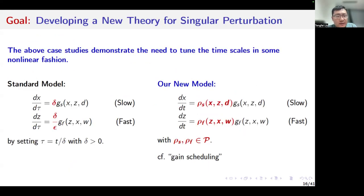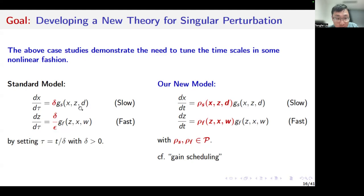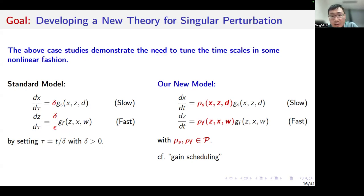The equations on the left-hand side give the standard model of singular perturbation. I introduced a time rescaling so that each subsystem is associated with a perturbation parameter. Delta is associated with the slow dynamics, and delta over epsilon is associated with the fast dynamics, but this model is equivalent to the standard model. The aforementioned case studies demonstrate the need to tune the time scales in some non-linear fashion, so I proposed a new model.